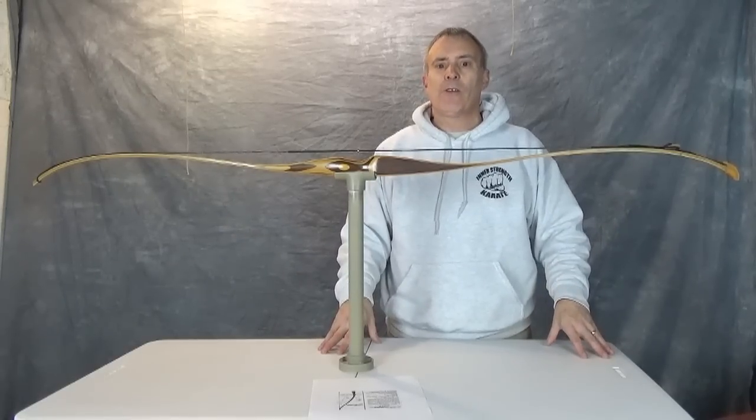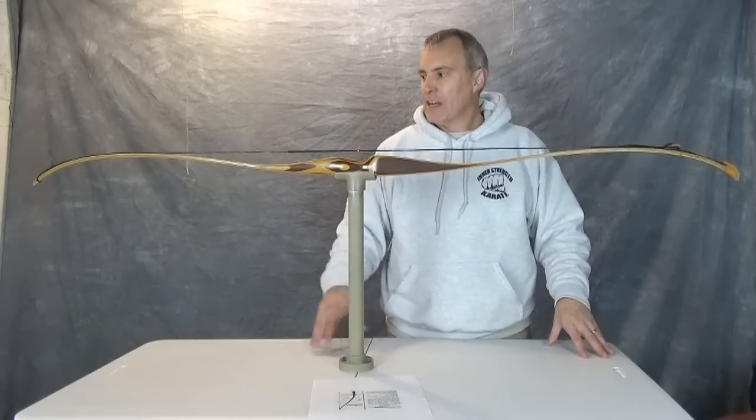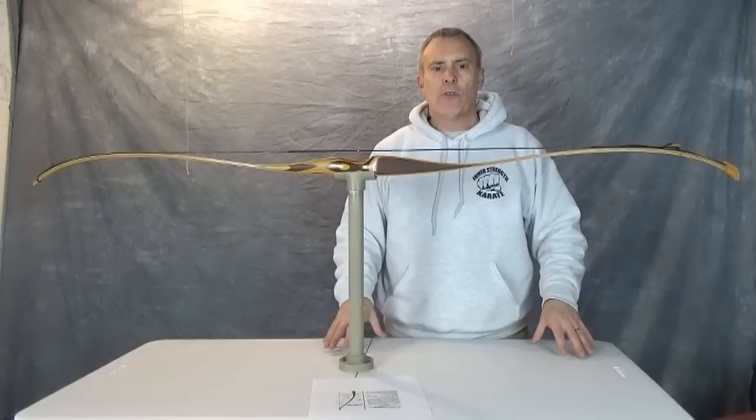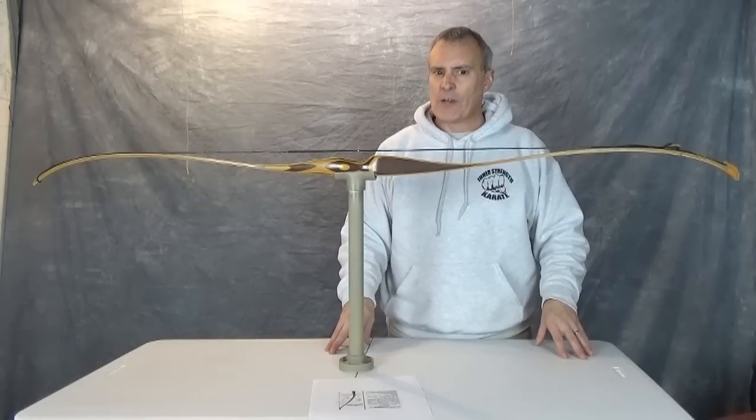And this is the Colt Model 960. It's a 60-inch bow with a draw weight of 40 pounds at 26 inches.